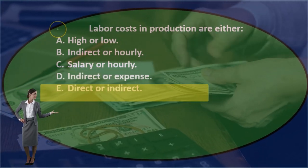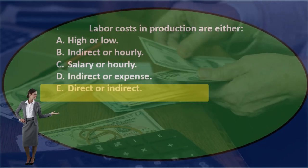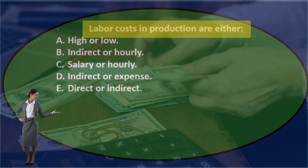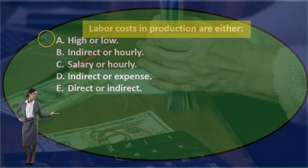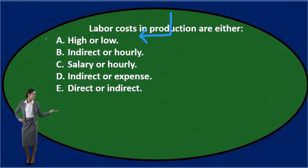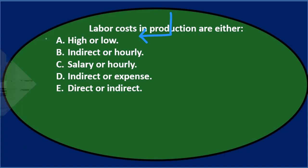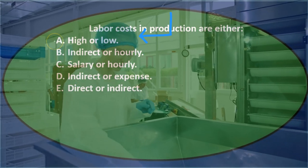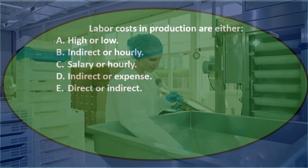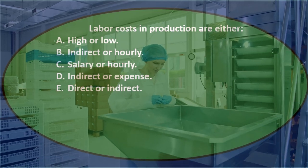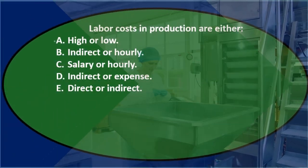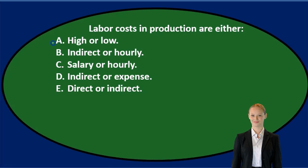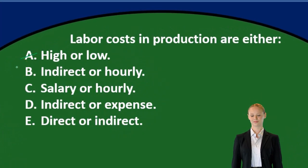Let's go through this using the process of elimination. Labor costs in production — option A says high or low. That's possible; they could be in between too. So labor costs could be high or low, but this seems kind of arbitrary. High or low doesn't seem to be the types of terms we're looking at here.